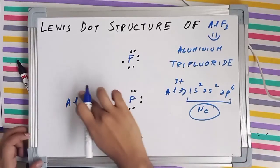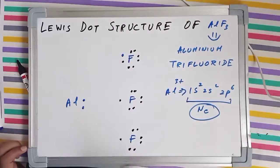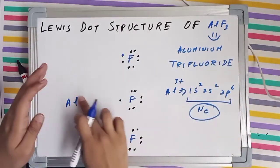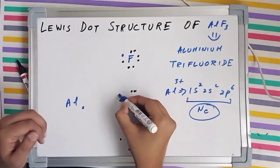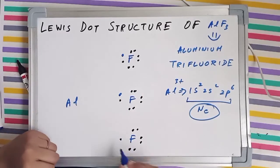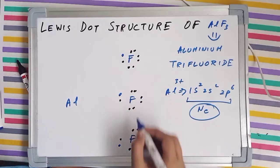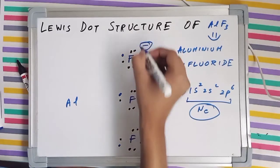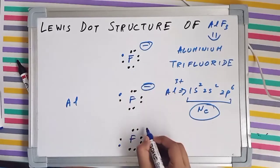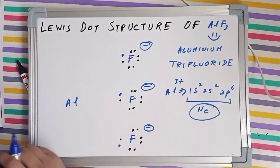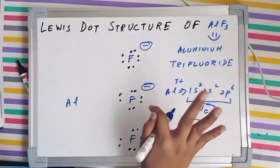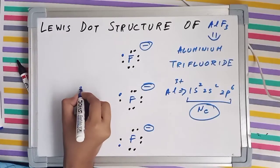So aluminum donates its first electron to F1 the first fluorine, its second electron to the second fluorine, and its third electron to F3 the third fluorine. Having gained single electrons, each fluorine has gained negative charge, whereas aluminum having donated 3 electrons will gain 3 positive charges.